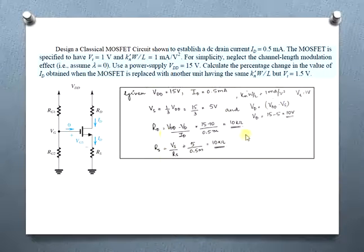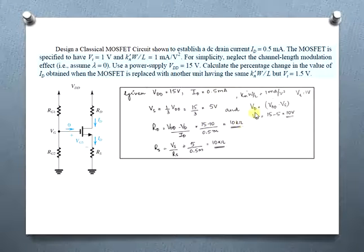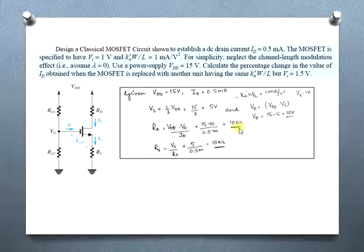Noting the given parameters: the supply voltage and the drain current. The source voltage is computed as VS = (1/3) · VDD, giving VS = 5 V. The drain voltage is VDD minus VS, giving VD = 10 V. From the equations, RD = (VDD − VD) / ID = 10 kΩ, and the source resistance RS = VS / ID = 10 kΩ.